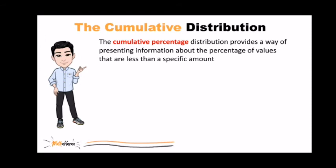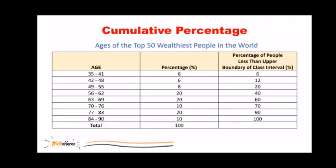The last type of distribution is the cumulative distribution. The cumulative percentage distribution provides a way of presenting information about the percentage of values that are less than a specific amount. Let us use the previous example and get the cumulative percentage column.